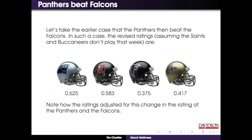Look what we have here - the Panthers go up and the Falcons go down. Of course. But now look at the Buccaneers - they didn't play, they didn't do anything, and yet they went slightly up. And the Saints went down. Let's talk about the Buccaneers going up. Can anyone perceive what might have happened? They could have beaten the Panthers earlier in the season. By the fact that they beat the Panthers earlier, and now the Panthers are considered a stronger team, the Buccaneers are considered a stronger team too.